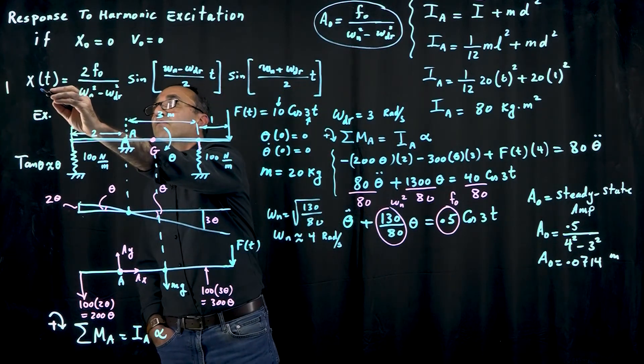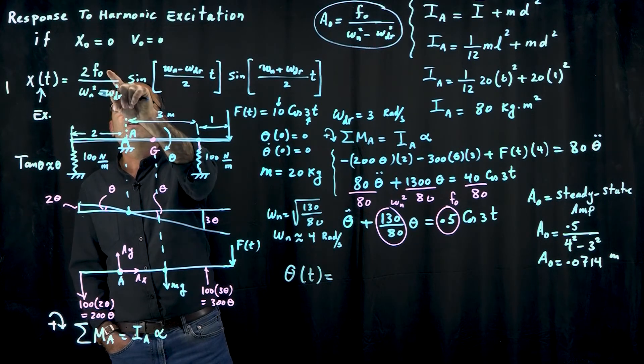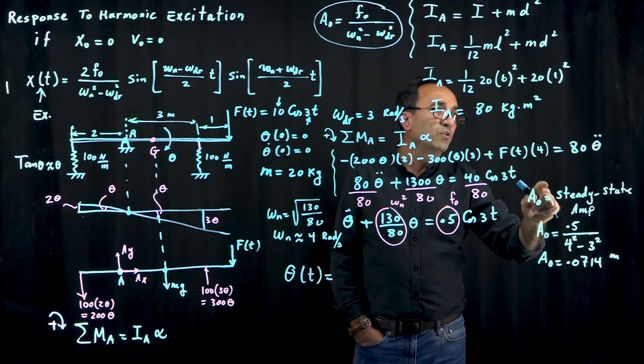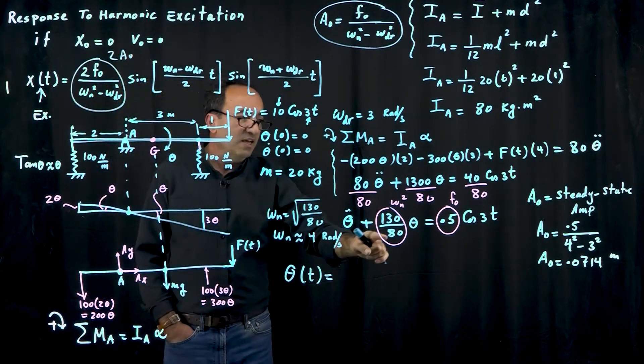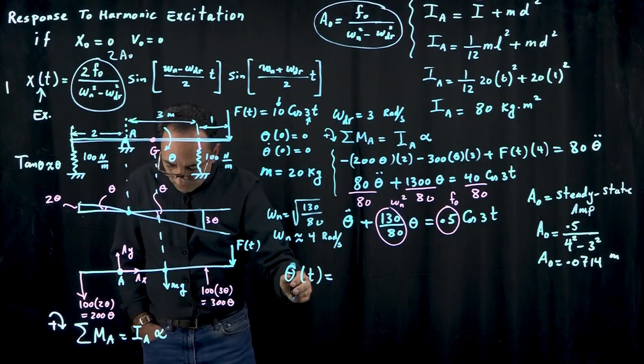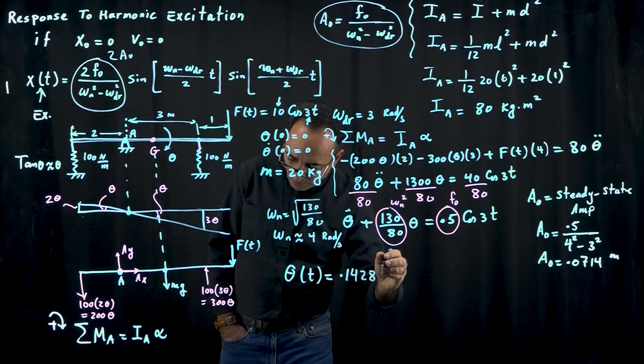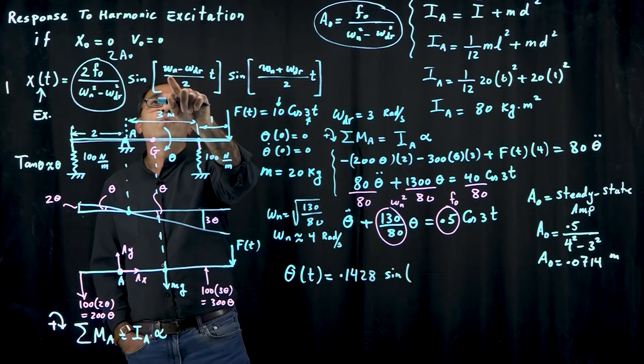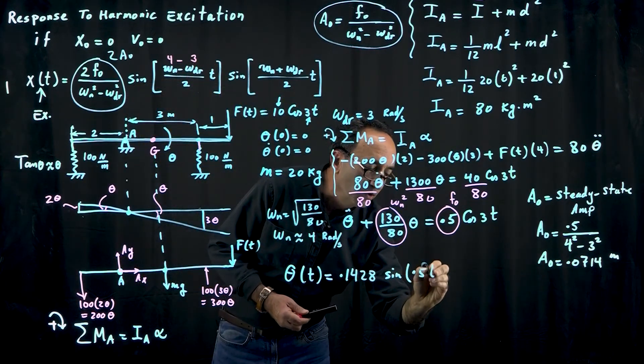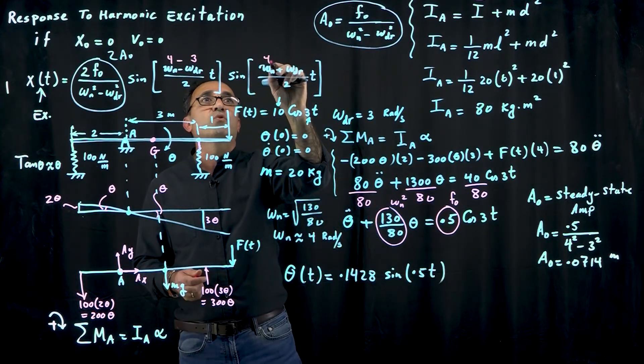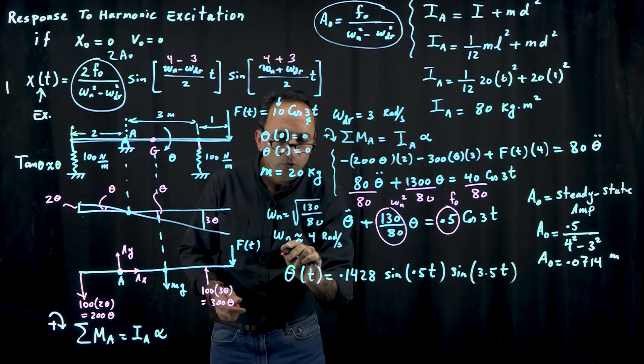Let me give you the overall solution. The overall solution, instead of x we're using theta. Theta as a function of time is 2f0 over omega_n squared minus omega_dr squared. I already know what f0 divided by omega_n squared minus omega_dr squared is, that's basically 2A0 here. I take advantage of that and make that double, so that becomes 0.1428 times sine of omega_n minus omega_dr, 4 minus 3 divided by 2, that's 0.5. So one frequency is 0.5 radians per second. And this one becomes 4 plus 3, 7 divided by 2, 3.5. That's the other frequency. This is your overall solution.